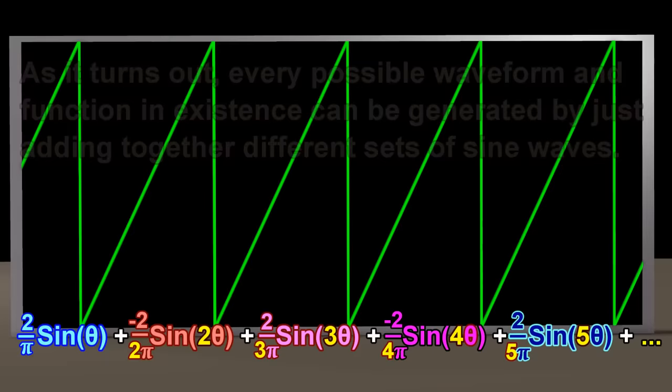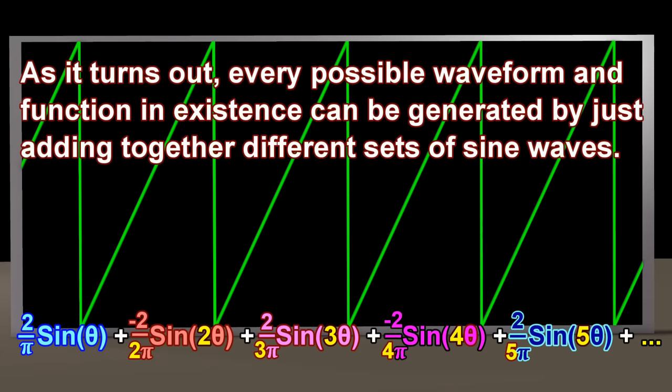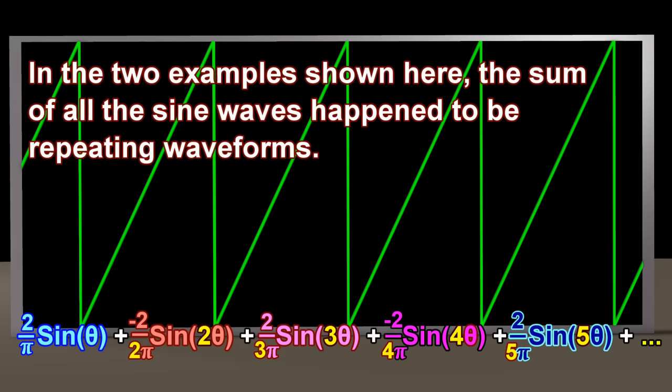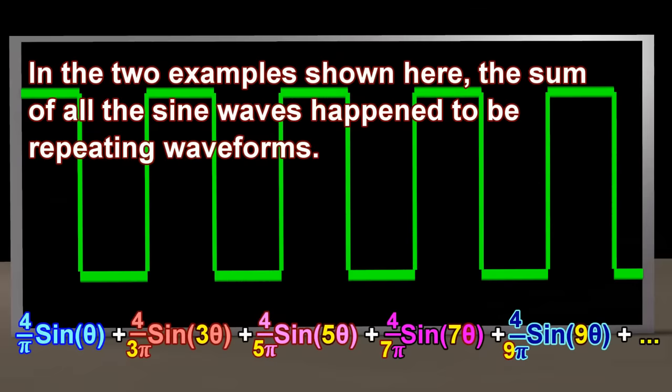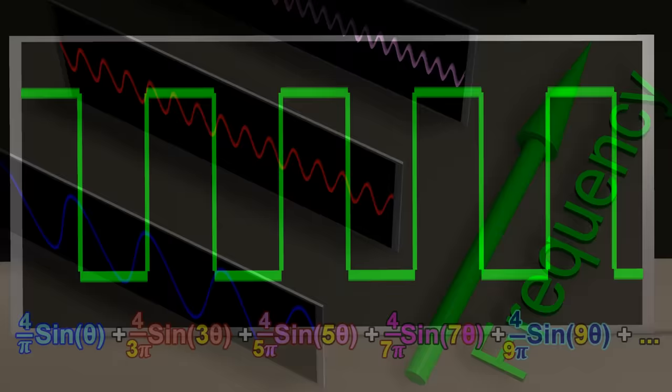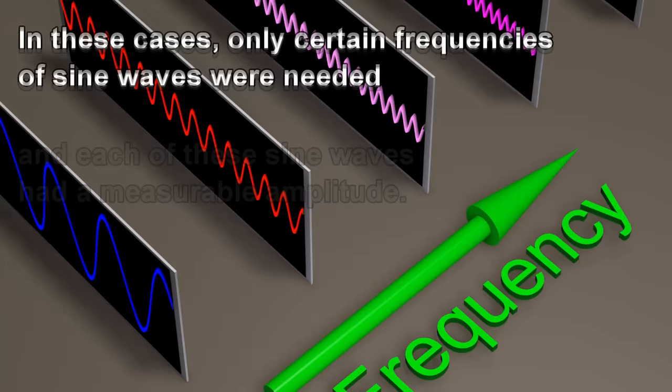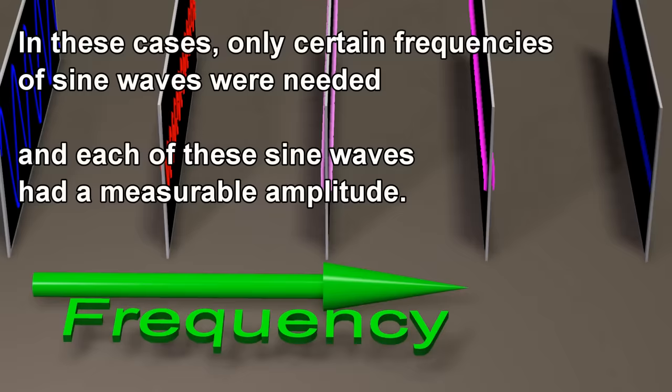As it turns out, every possible waveform and function in existence can be generated by just adding together different sets of sine waves. In the two examples shown here, the sum of all the sine waves happened to be repeating waveforms. In these cases, only certain frequencies of sine waves were needed, and each of these sine waves had a measurable amplitude.